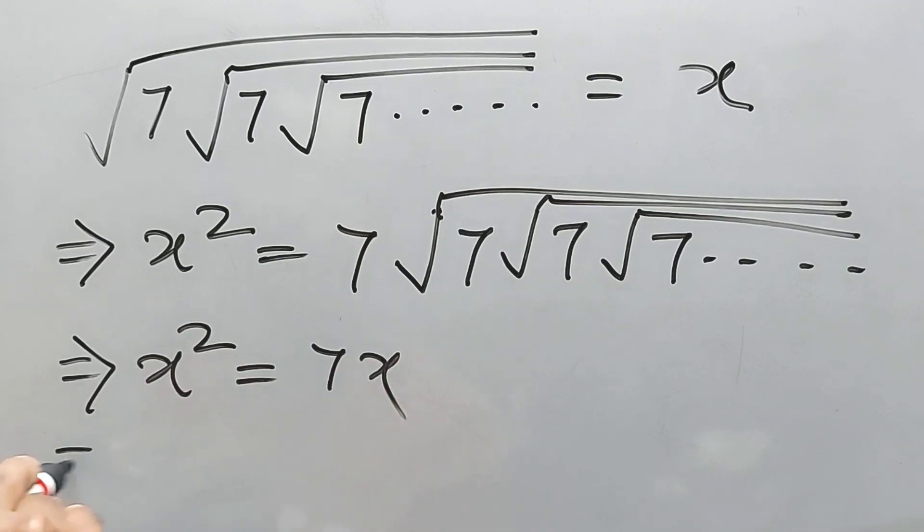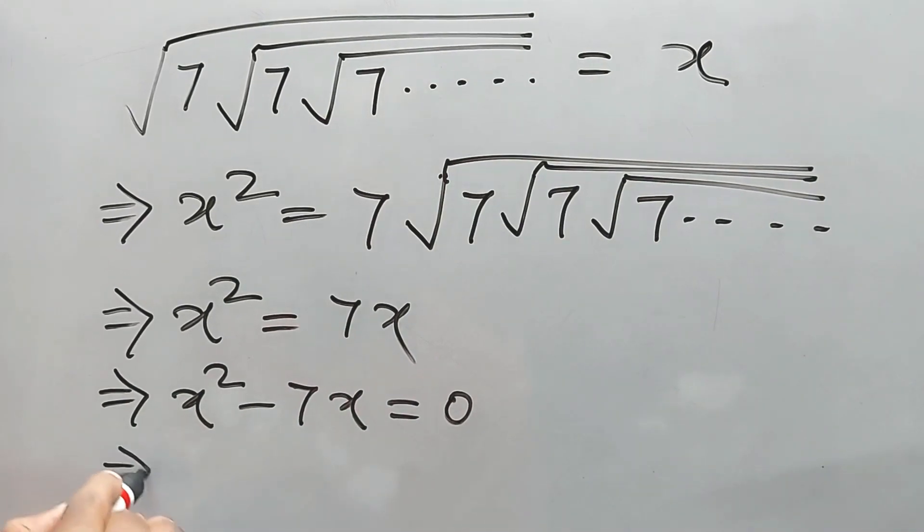And therefore, if we take it on the left side, we will get x squared minus 7x is equal to 0. And if we factorize, if we take common x, it will be x into x minus 7.